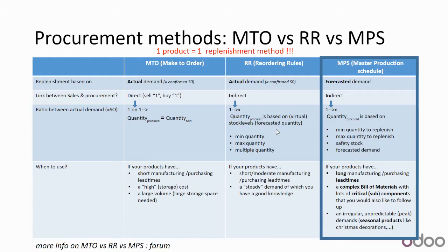The third concept is procurement methods. In Odoo there are three main procurement methods: Make-to-Order, reordering rules, and the Master Production Schedule. What's important to keep in mind is that one product uses one replenishment method — it's either MTO, reordering rules, or MPS. You cannot combine these replenishment methods for a single product.